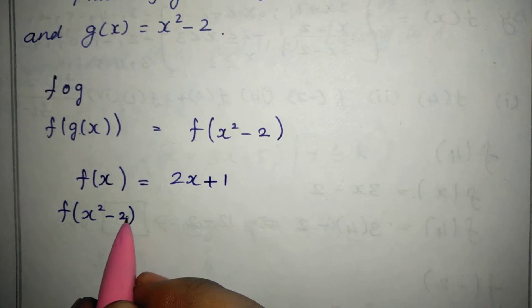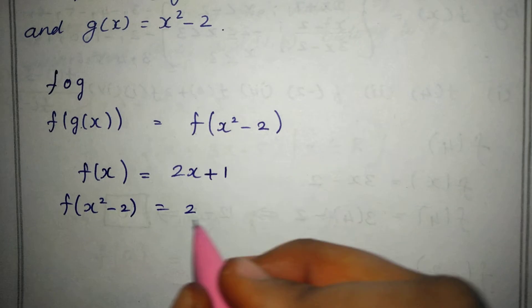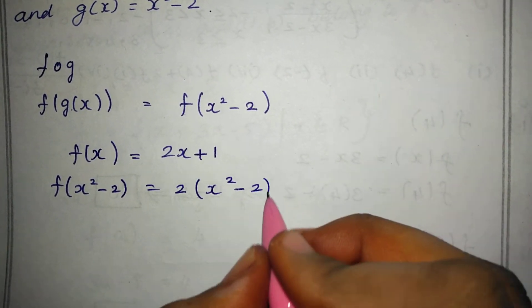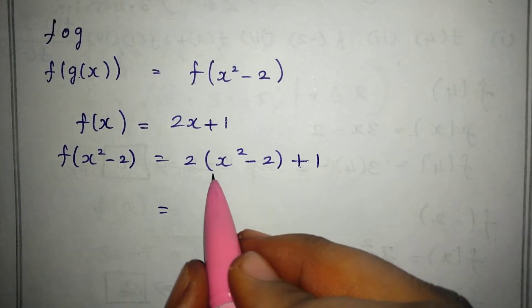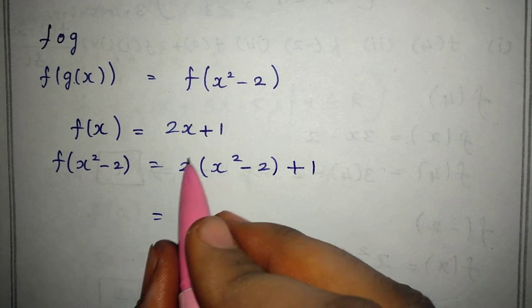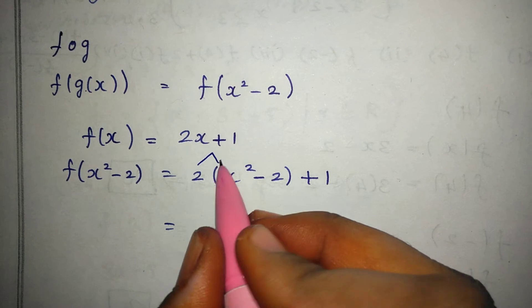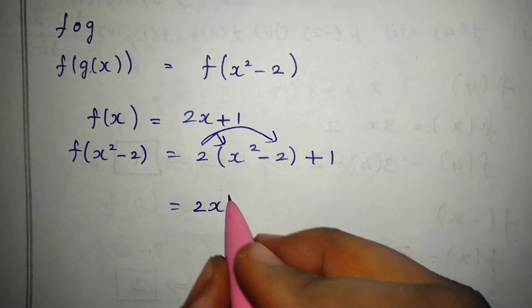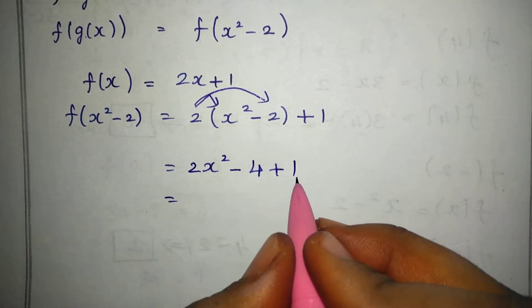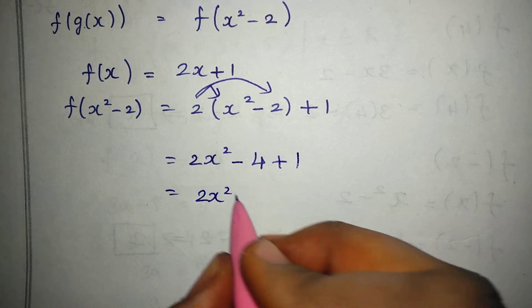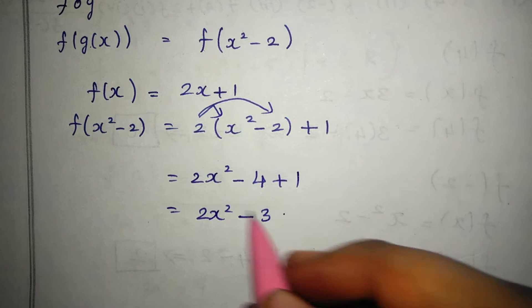We substitute x square minus 2 in place of x: 2 into x square minus 2, plus 1. Solving this: 2x square minus 4 plus 1, which gives us 2x square minus 3. So f of g of x is equal to 2x square minus 3.